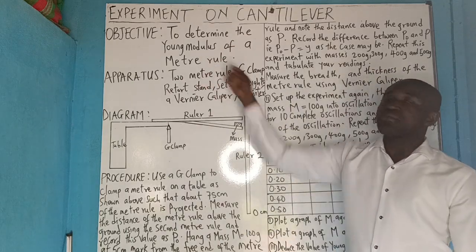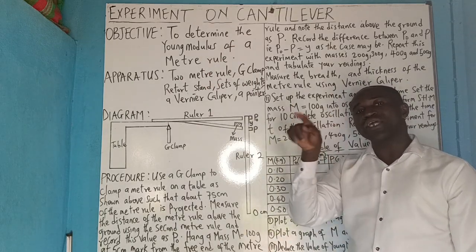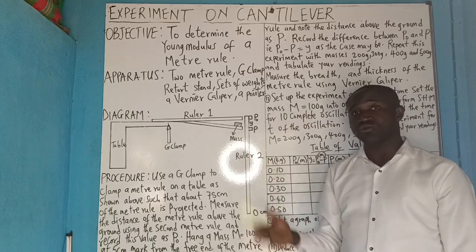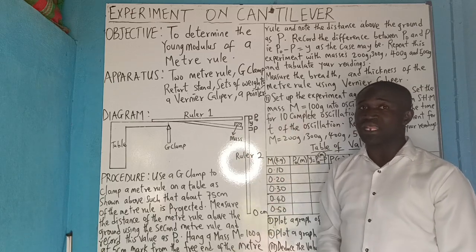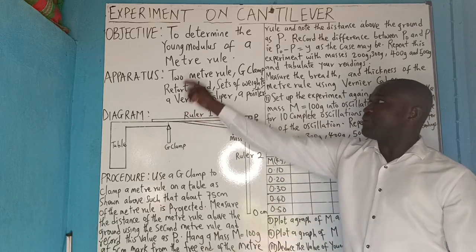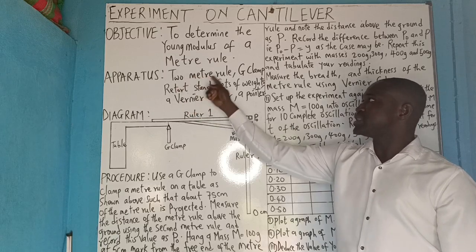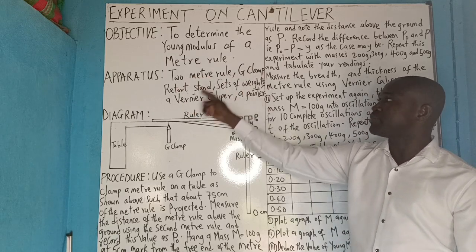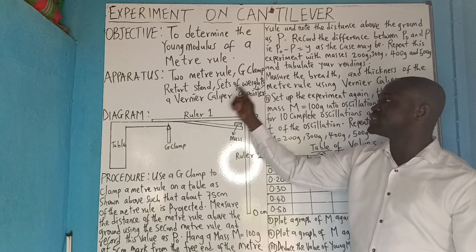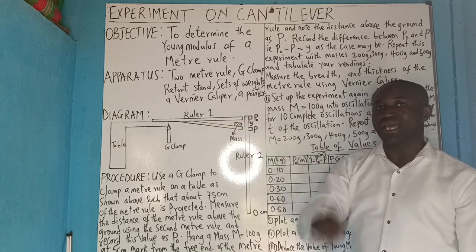The meter rule we talk about is that 100-centimeter rule, the one you make use of in the lab. The apparatus are: two meter rules, G-clamp, retort stand, sets of weights, a Vernier caliper, and a pointer.